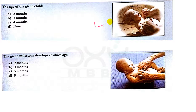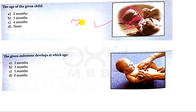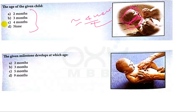Now in this picture, both head and neck holding capacity the child has achieved. That is why the age of the baby is equal to four months of age. So in these four options, C is the correct answer.